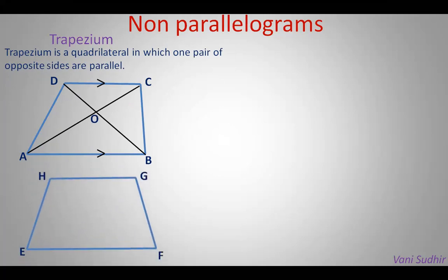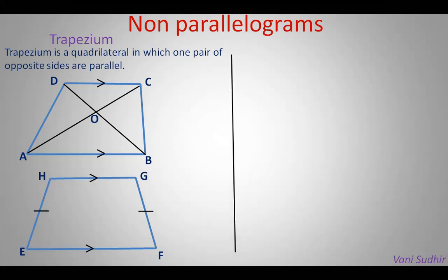Let us take one more trapezium EFGH in which HG is parallel to EF, and the non-parallel sides EH and GF are equal. So it is named as an isosceles trapezium. Also, the two base angles E and F are equal, and angles H and G are also equal.